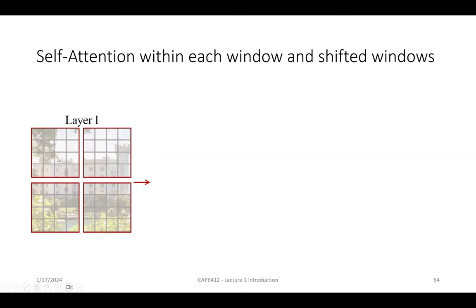The Swin-Tiny model uses a 96-dimensional base embedding. The layers per stage are 2, 2, 6, 2 for Swin-Tiny, and different configurations for Swin-Small, Base, and Large. The results show number of parameters for each variant and compare top-1 accuracy on ImageNet. Swin outperforms ViT and ResNet in these comparisons.